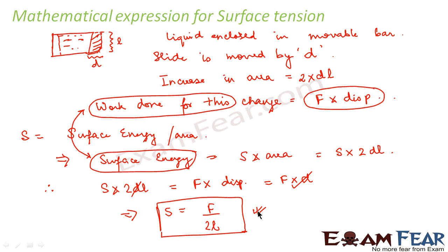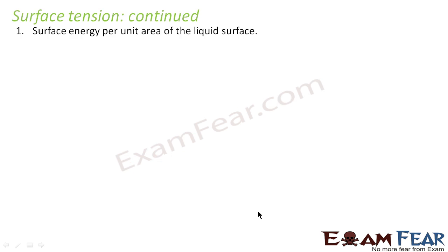So this is how surface tension is expressed mathematically. So I hope you understood what is surface tension. It is the surface energy per unit area of the liquid surface. Also, it can be expressed as force per unit length on the liquid surface. So both of these define surface tension.